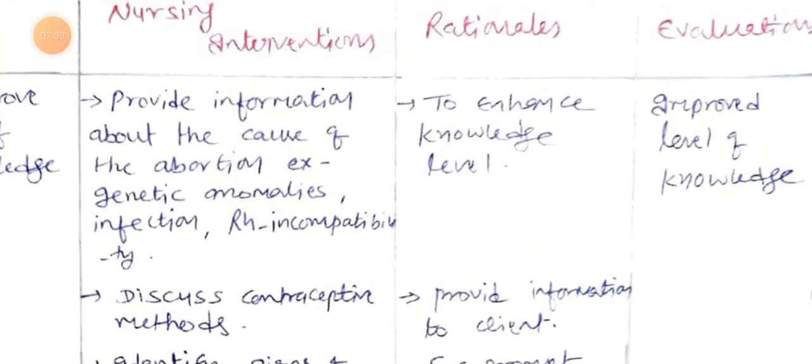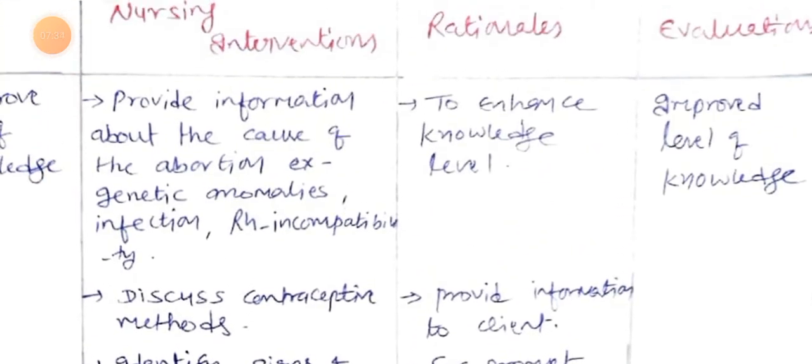After providing these interventions, we monitor the client for evaluation. The nursing evaluation is an improved level of knowledge, assessed by asking different questions. The client can now give adequate answers, indicating they have adequate knowledge about abortion. This completes nursing diagnosis number two.